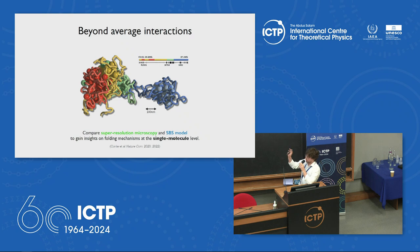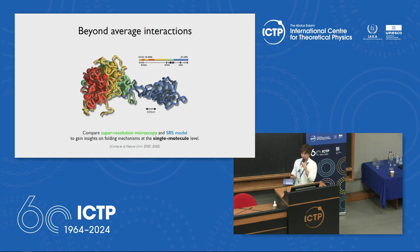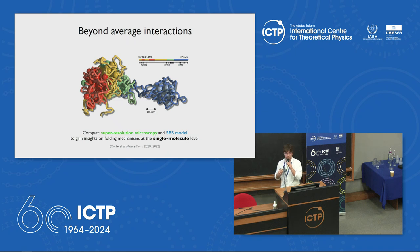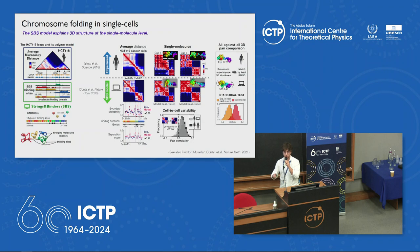The focus of the remaining time is single cell. So far we've matched population-average contacts, but now microscopy has made huge improvements and we have quantitative data on 3D structure at the single DNA molecule level. As physicists, this means we can test the micro-phase separation process at the level of a single DNA molecule. You can take the 3D conformations from microscopy experiments and see whether they match the ensemble of 3D structures predicted by the theory.